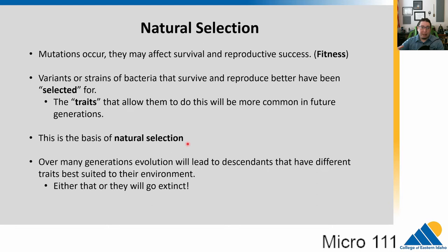This is the basis of natural selection — things that survive and reproduce better are fitter and will be selected for. The environment may change, and fitness might change. Over many generations, this will lead to descendants with different traits that are better suited to the environment. Or if this doesn't happen, the organism will go extinct — we've seen that countless times in history.